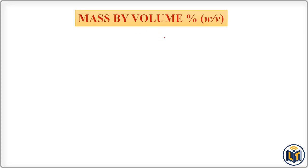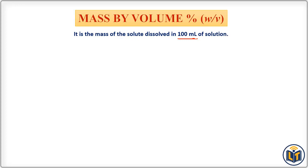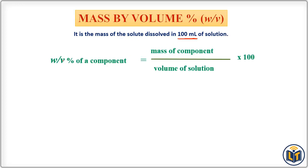Mass by volume percent is a unit used when one component — usually the solute — is in solid state. If we assume the total volume of the solution is 100 ml, then it is the mass of solute dissolved in 100 ml of solution. Its formula is: mass by volume percent of a component equals mass of component divided by volume of solution in ml, multiplied by 100.